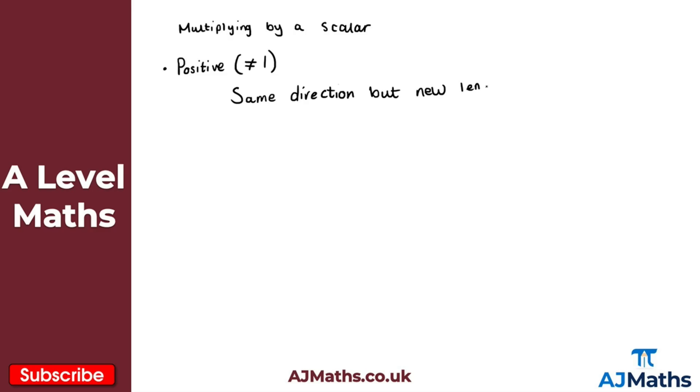Now be careful here. A bit of a misconception with this is that because we're multiplying by a positive scalar, then the length must always be greater, be a bigger length. But that's not necessarily true. Because if you think about it, if we multiply through by a half, then the length would get smaller. A half is clearly positive, but it means the length would be smaller. So it doesn't always mean that it would be a bigger length.